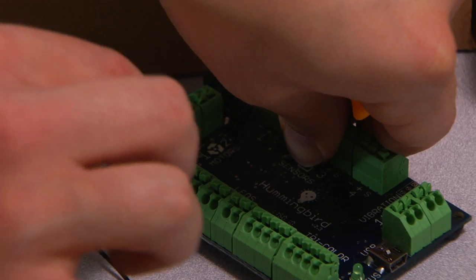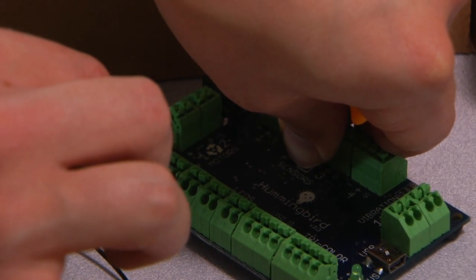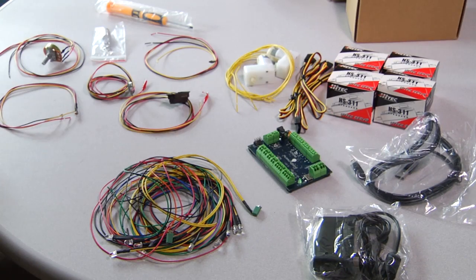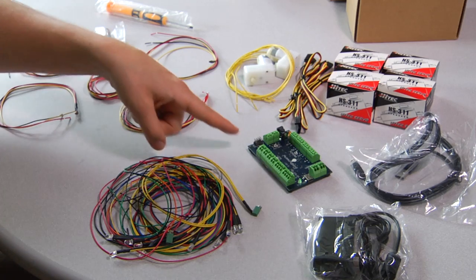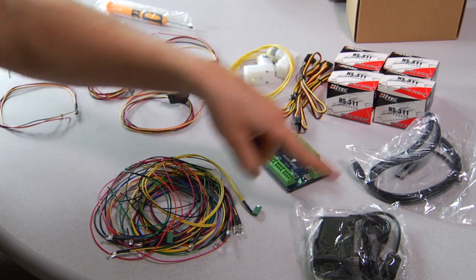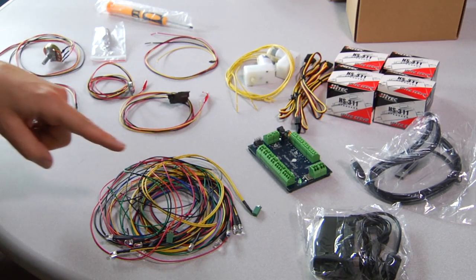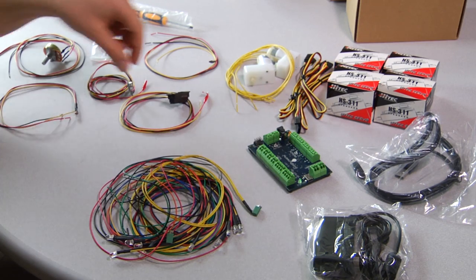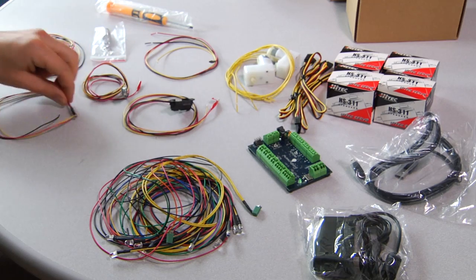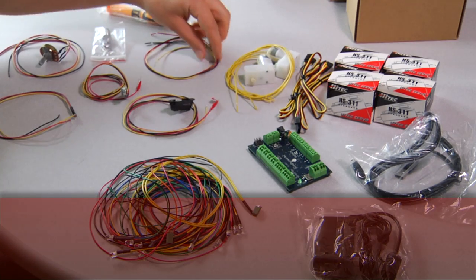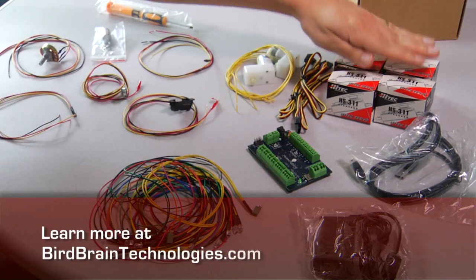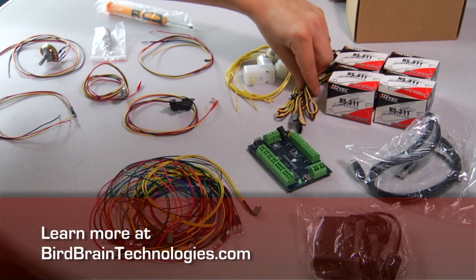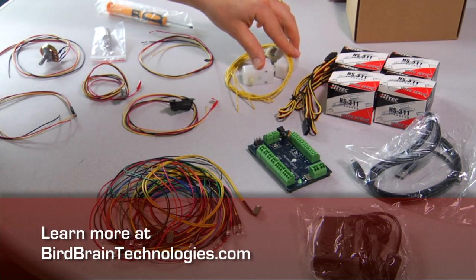You can sort of gently pull on it to make sure that you've made a good connection. And to recap, here's all the parts laid out. The hummingbird controller, USB cable, power supply, LEDs, tricolor LEDs and vibration motors, distance sensor, sound sensor, light sensor, knob, temperature sensor, four servos, servo extension cables, two DC motors, and a screwdriver.